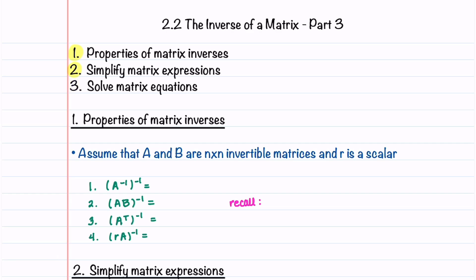Let's begin by learning four properties of matrix inverses. We're going to assume that A and B are n by n invertible matrices and that R is a scalar. Our first property tells us that the inverse of the inverse of a matrix is the matrix itself. Our second property tells us that the inverse of the product AB is equal to B inverse times A inverse.